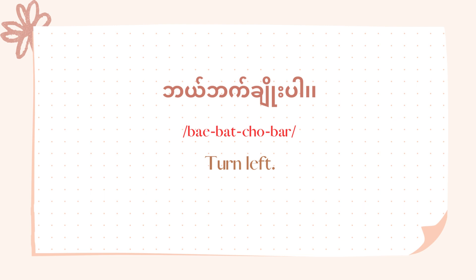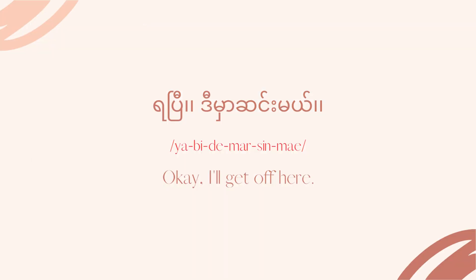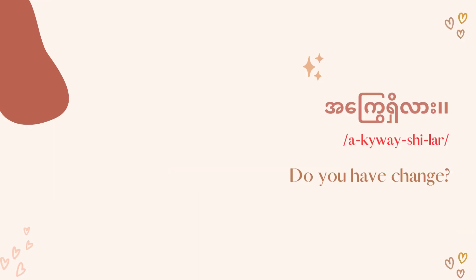Another useful phrase: 'I'll get off here.' We say: Ya Bi Dimase May. Ya Bi means it's fine or we've reached already, and Dimase May means I'll get off here. So 'Ya Bi Dimase May' means 'I'll get off here' or 'I'll stop here, we've arrived.'